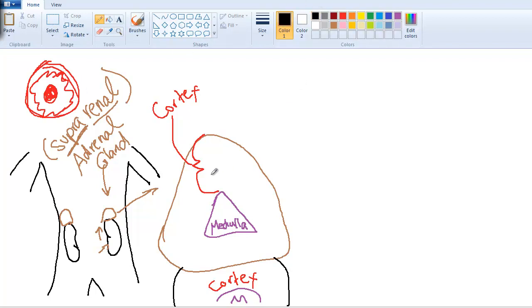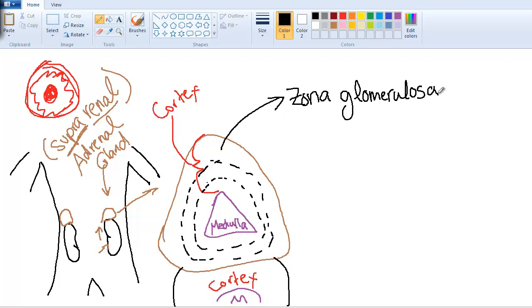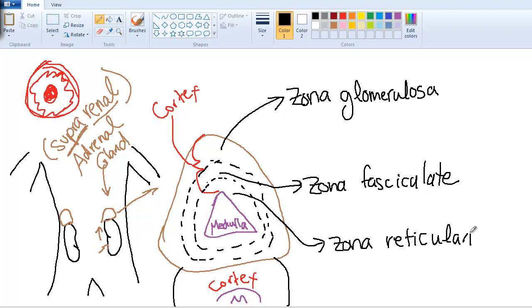The cortex is divided into three regions that go around it. There's the inside layer, and then this line divides the middle from the outside layer. The first layer is the zona glomerulosa. The next layer is the zona fasciculata. And the next zone is the zona reticularis, because there's a lot of reticular fibers.